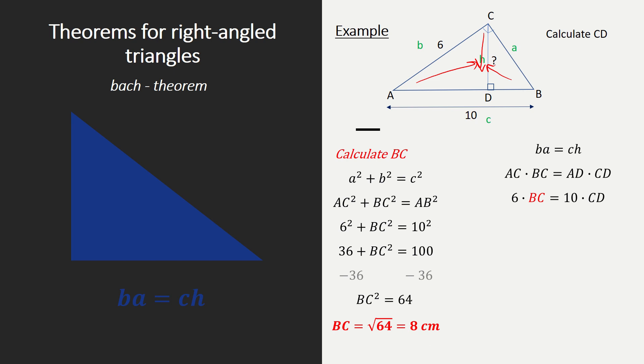And now we can fill our Bach method in further. So we get 6 times 8 because of the 8 centimeters equals 10 times CD. Please simplify this to 48 equals 10 CD. Divide both sides by 10 because we want to know what 1 CD is. And then we can see that CD is 4.8 centimeters.